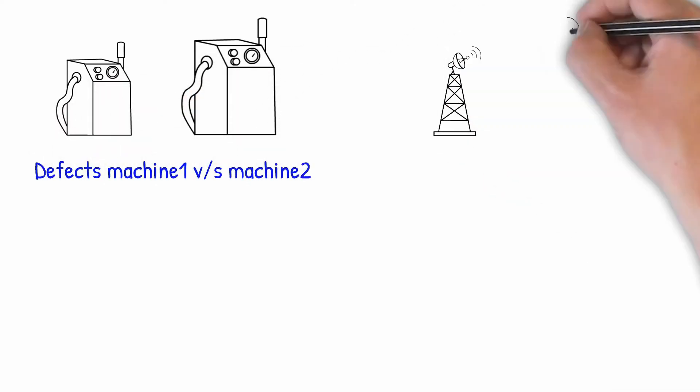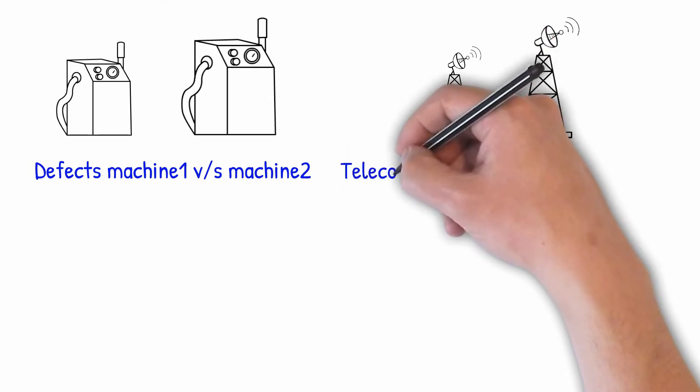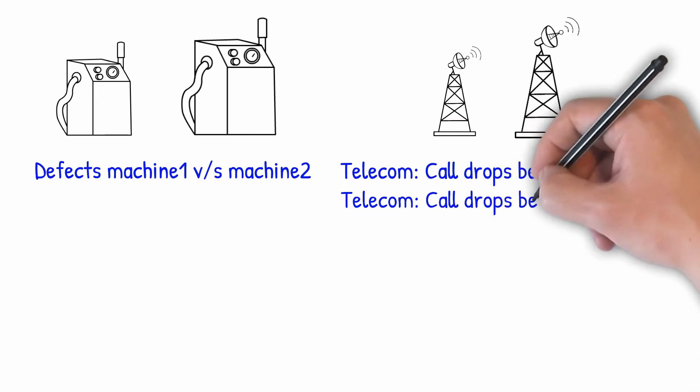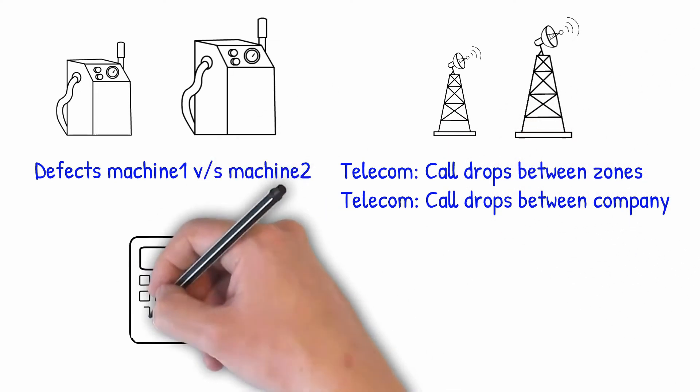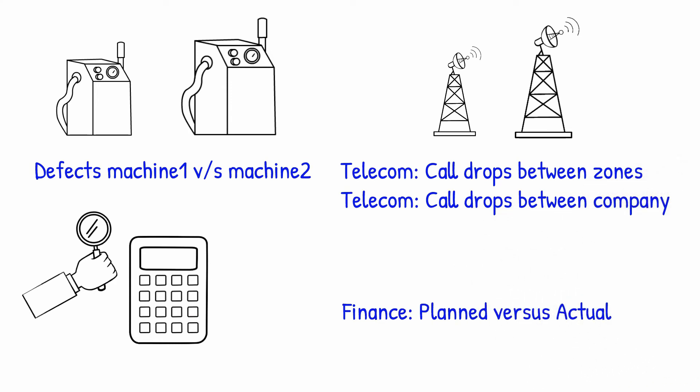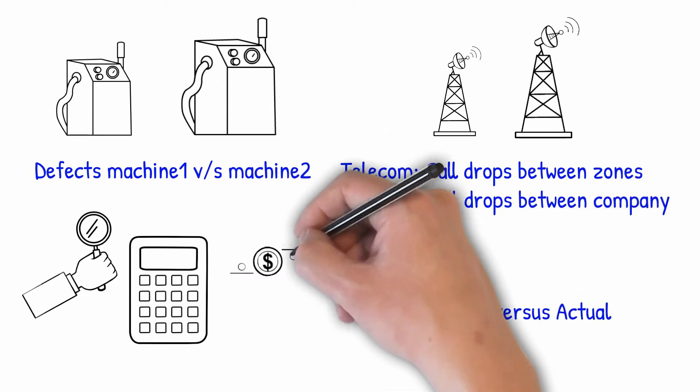Or in telecom networks we can compare the number of call drops in zone 1 versus the other zone or one telecom provider versus the other. We can also use it for quantitative investigation of plan versus actual behavior. In finance we can only limit the application by our ability of imagination.